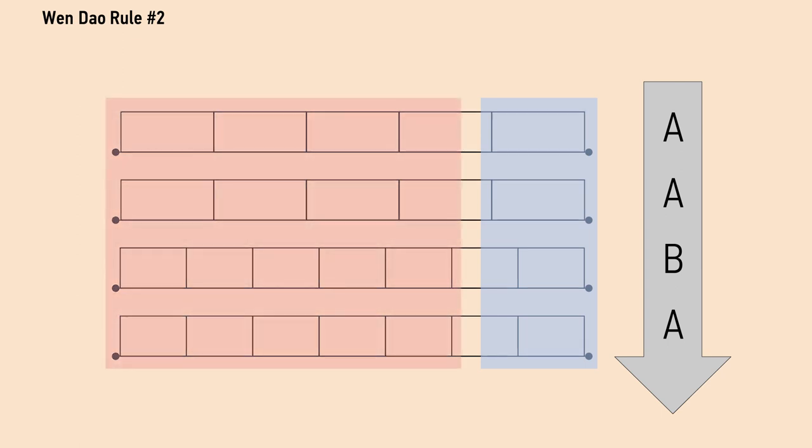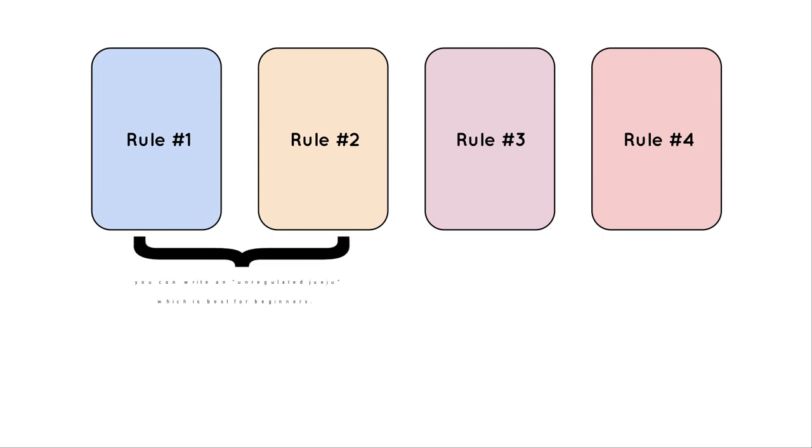Try not to rhyme words in any other position in the poem. By following level one and two rules, you can write an unregulated Jueju, which is best for beginners.